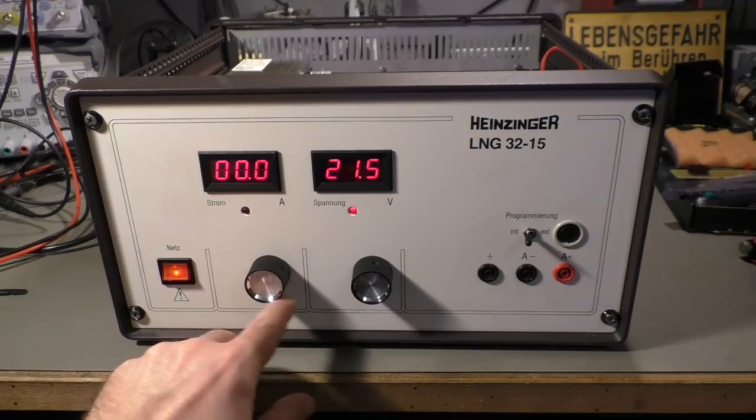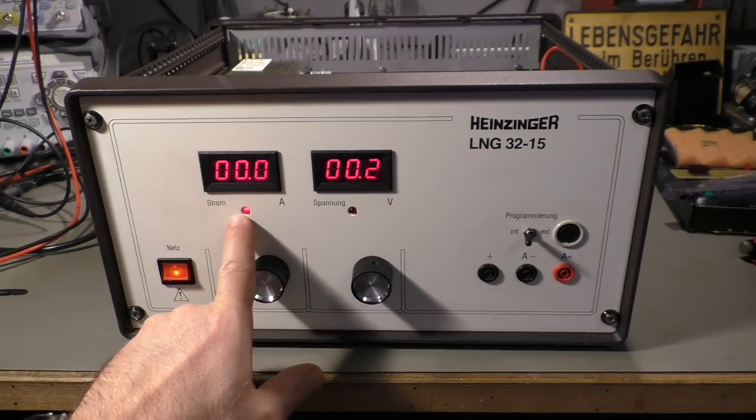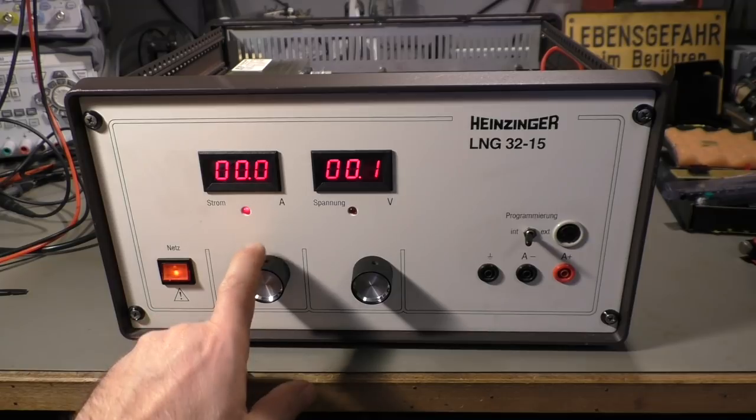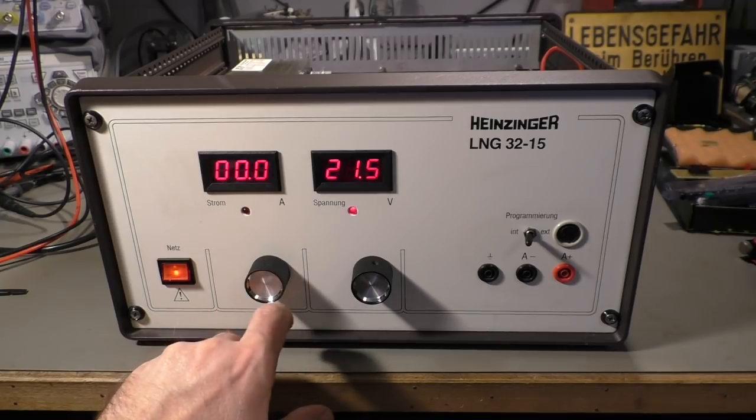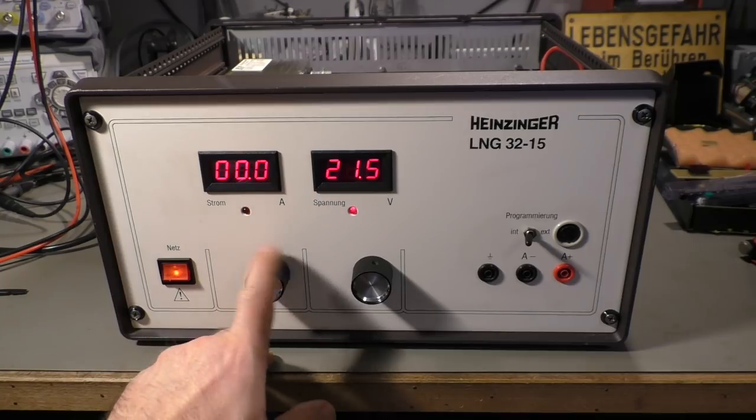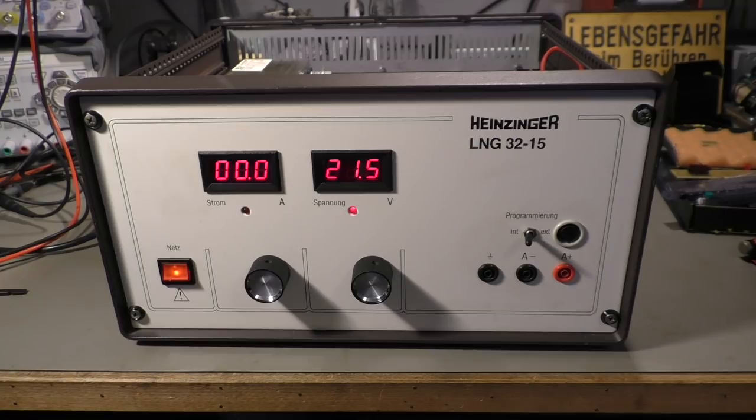If you are turning the amps down, it switches over to current limiting, which is indicated by this LED. Now it's back to voltage limiting. And if we hook up a load we can try that.